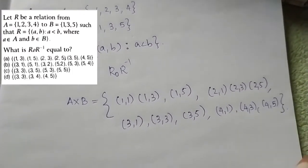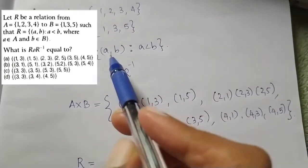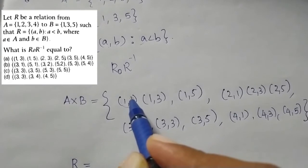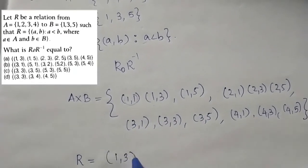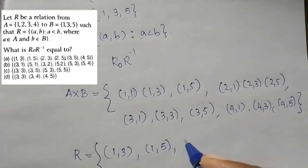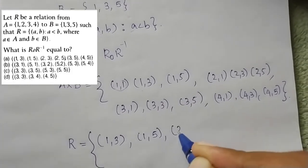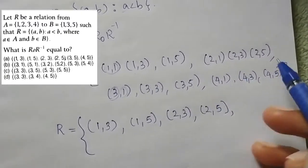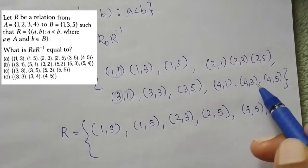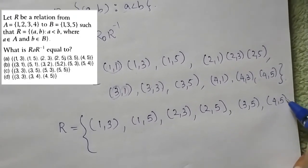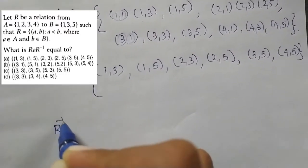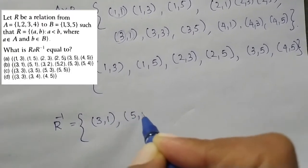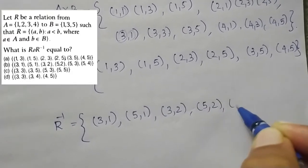The relation R (where a < b) includes: (1,3),(1,5),(2,3),(2,5),(3,5),(4,5) — keeping only pairs where the first element is less than the second. For R-inverse, we swap each pair: (3,1),(5,1),(3,2),(5,2),(5,3),(5,4).